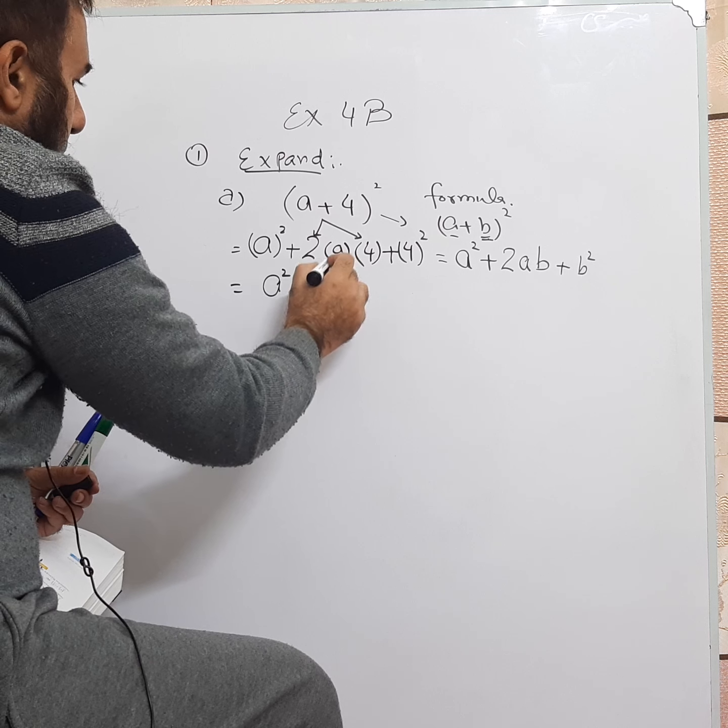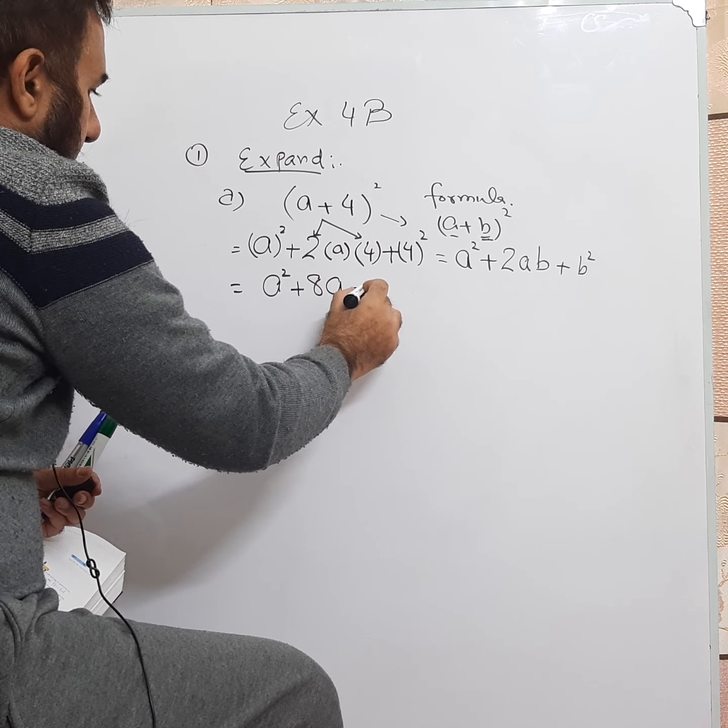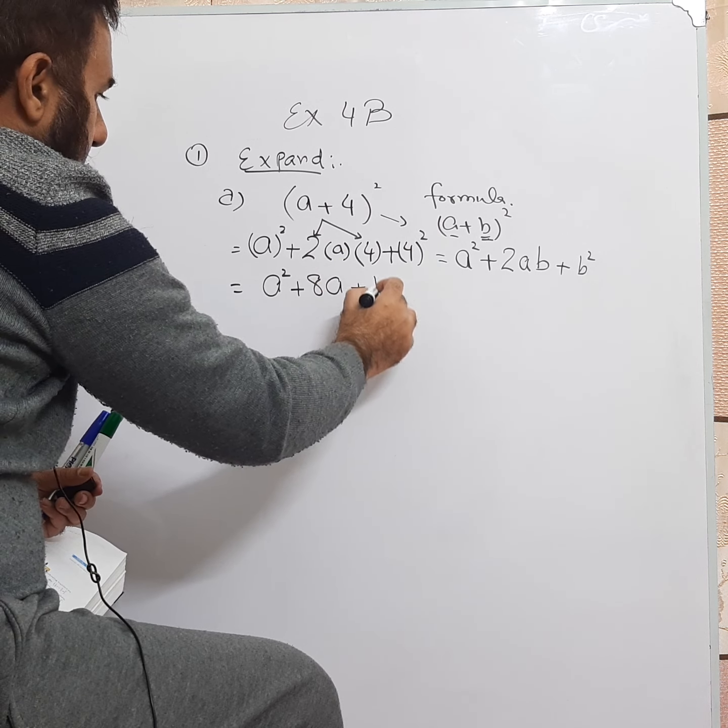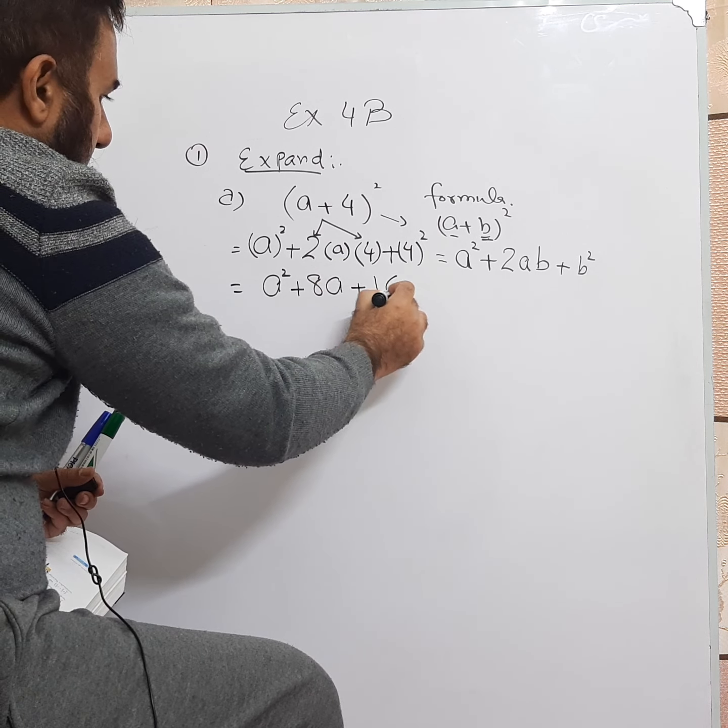Now we will solve. A squared is A squared. Plus 2 multiplied by 4: 2 fours are 8, into A. Plus 4 squared is 16. So when we expand (A plus 4) whole square, we get the answer A squared plus 8A plus 16.